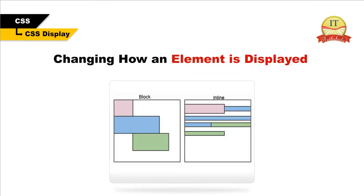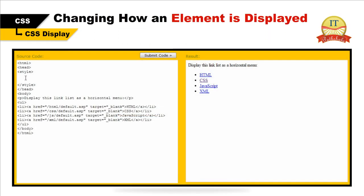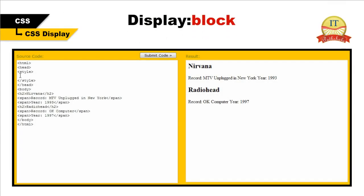Changing how an element is displayed — changing an inline element to a block element or vice versa can be useful for making the page look a specific way and still follow web standards. The following example displays list items as inline elements, and the next example displays span elements as block elements.